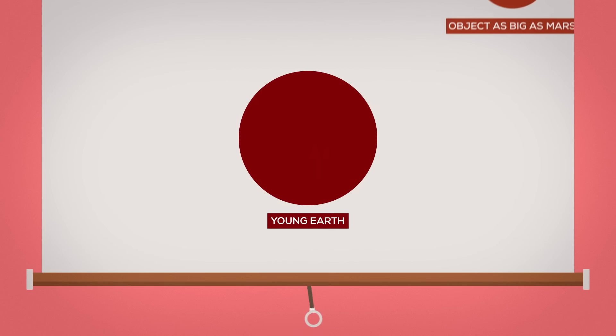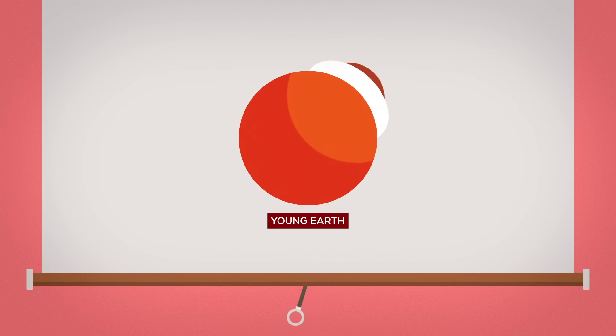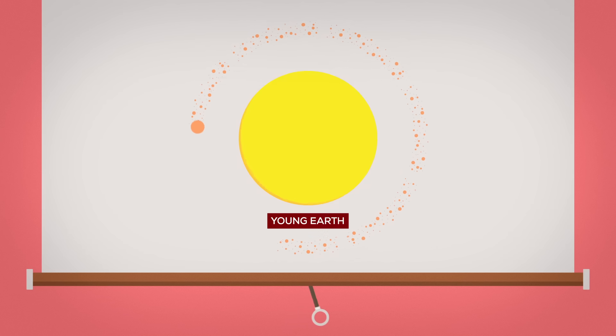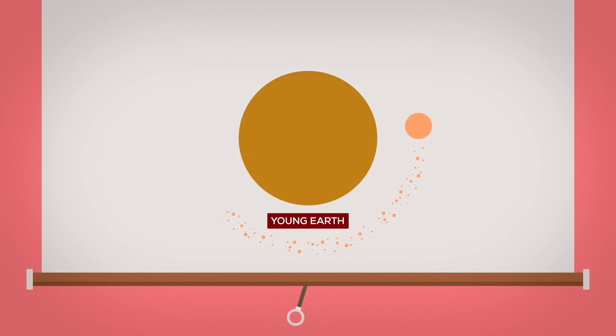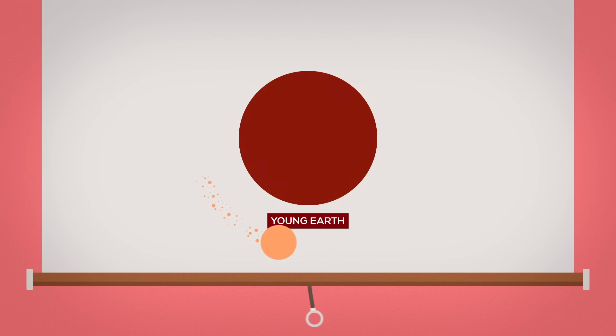At about this time when the solar system was young and chaotic, a giant object about as big as Mars collided with our home. The impact was violent and if the object had been more massive, it might have destroyed Earth. Material from Earth was smashed out into orbit and formed the Moon, which is the biggest satellite in relation to its planet in the solar system.